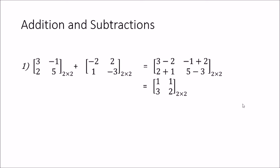In the first example we are going to add two 2 by 2 matrices. Before doing that, let me explain how we refer to the locations of elements. This element is in the first row and first column, so it is called the (1,1) element. This one in the first row and second column is the (1,2) element. The one in the second row and first column is the (2,1) element, and the one in the second row and second column is the (2,2) element.